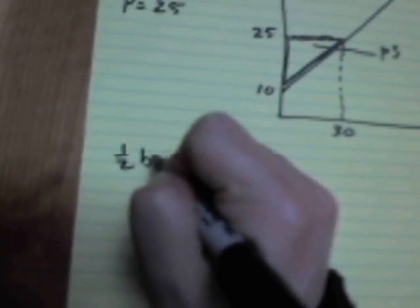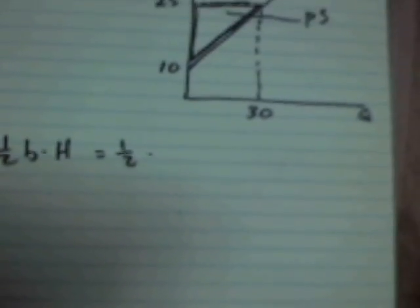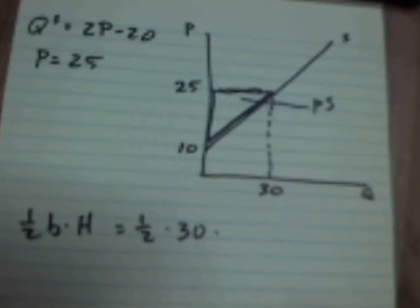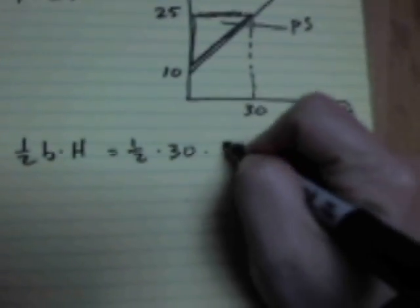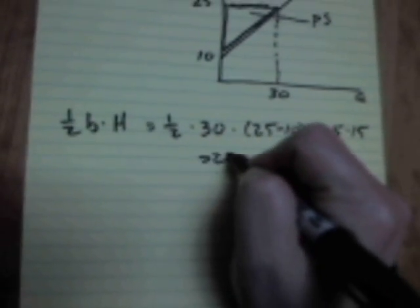So how do you calculate the area of a triangle? One half base times height. So this is one half times the base. The base is how many actually get sold, 30, times the height, which is the gap between what they actually get and the minimum price that they would take, 25 minus 10. So one half times 30, that's 15, times 15, for a grand total of 225.